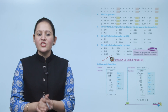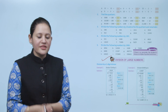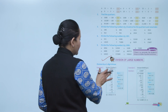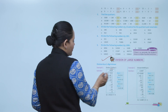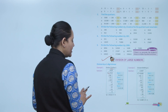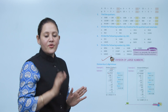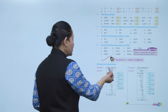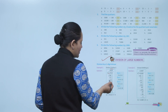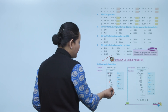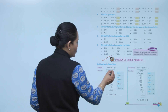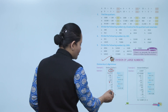Division by a one-digit divisor. We have to divide 7254 by 3. Put the dividend 7254 inside the bracket and write divisor 3 outside. Start from the leftmost digit, 7. Find a number in 3's table equal to or just less than 7: 3 twos are 6, subtract to get 1. Bring down 2 to get 12; 3 fours are 12, remainder 0. Bring down 5: 3 ones are 3, remainder 2. Bring down 4 to get 24; 3 eights are 24, remainder 0. Quotient is 2418 and remainder is 0.